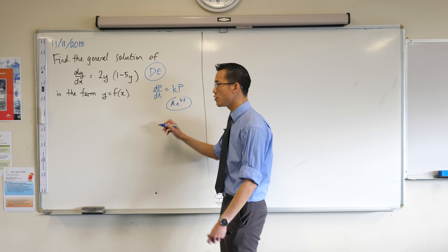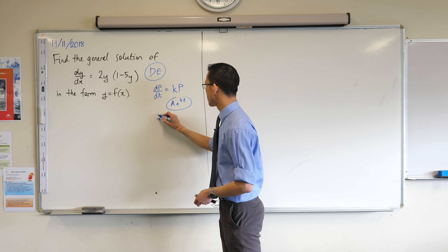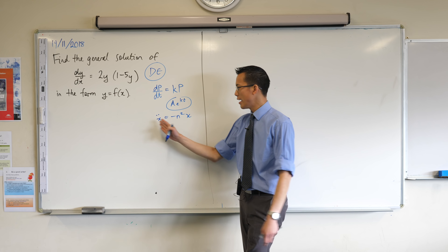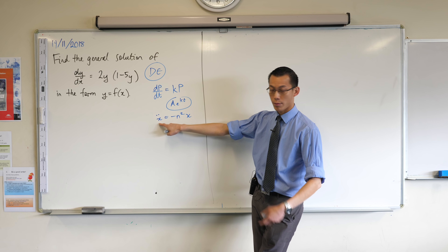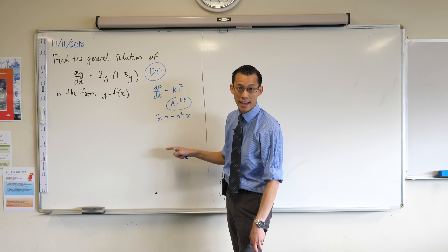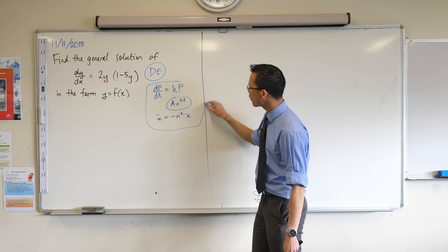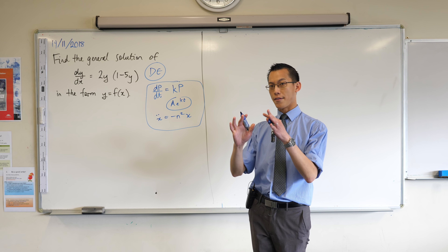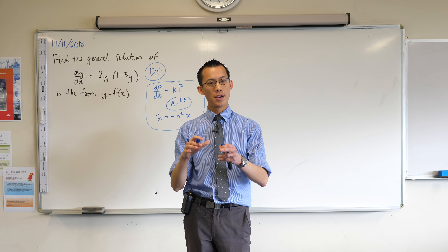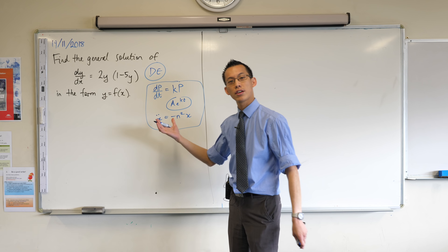In Extension 1, you might be more familiar with things like x equalling negative n squared x double dot. We've got acceleration in terms of displacement here, so that's a derivative with respect to time in terms of the original function. This is not exponential growth and decay — this is simple harmonic motion, going back and forth. So we've met differential equations before, even if you haven't called them that.